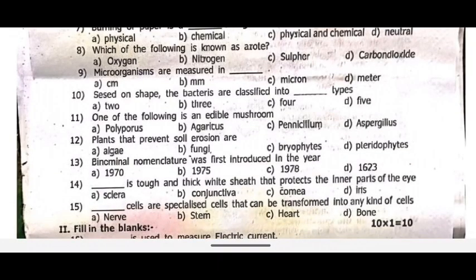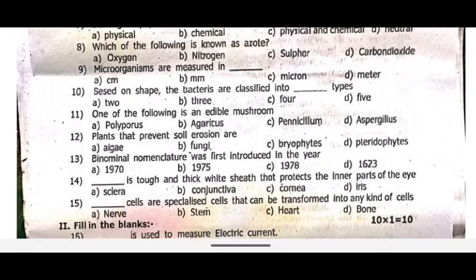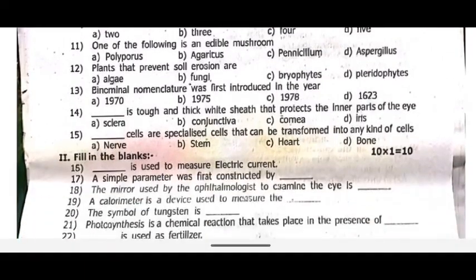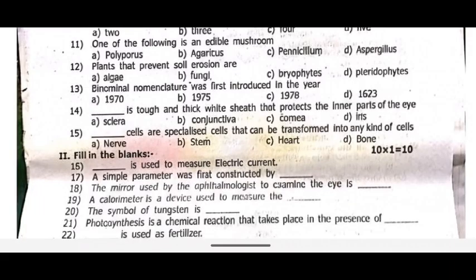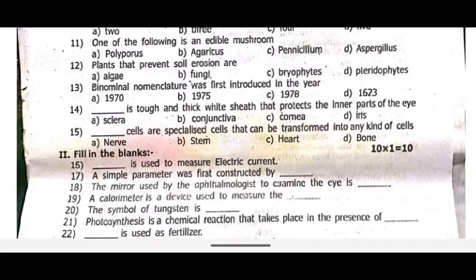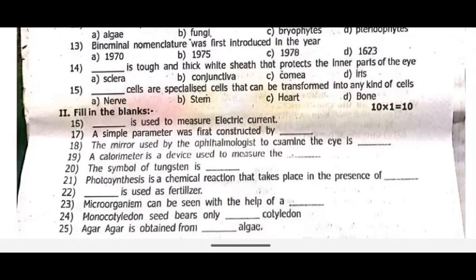The bacteria are classified into dash types. Ninth one, one of the following is an edible mushroom. Plants that prevent soil erosion are dash. Thirteenth one — paranga. Fourteenth one, dash is tough and thick white scent that protects the inner part of the eyes. Fifteenth one, dash cells are specialized cells that can be transformed into any kind of cells.